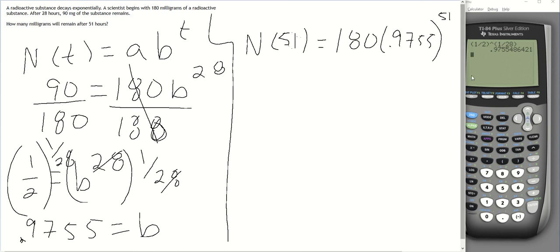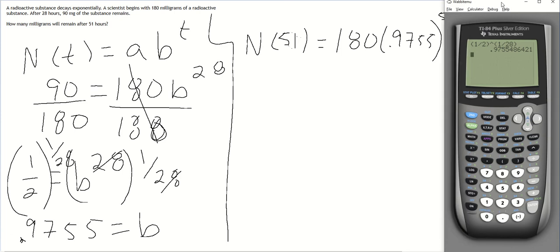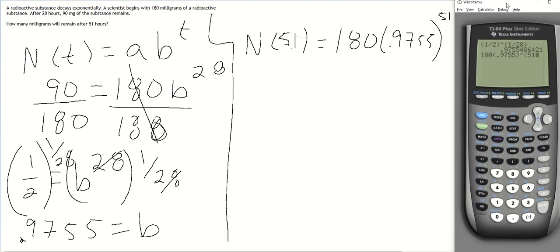All right, so I'll just go into the calculator and let's do 180 times 0.9755 raised to the 51st power. And that should be good to go.